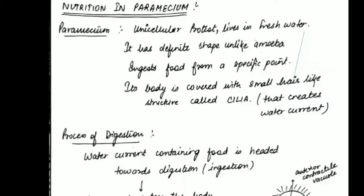Before starting with paramecium, a quick revision of nutrition in amoeba. Amoeba is a unicellular organism with pseudopodia coming out from any part of its surface, causing it to change shape. Those pseudopodia were temporary finger-like projections that come out wherever food is sensed. Amoeba is a holozoic animal, and holozoic animals mostly eat other animals, so amoeba eats small protozoans as well as algae as food.